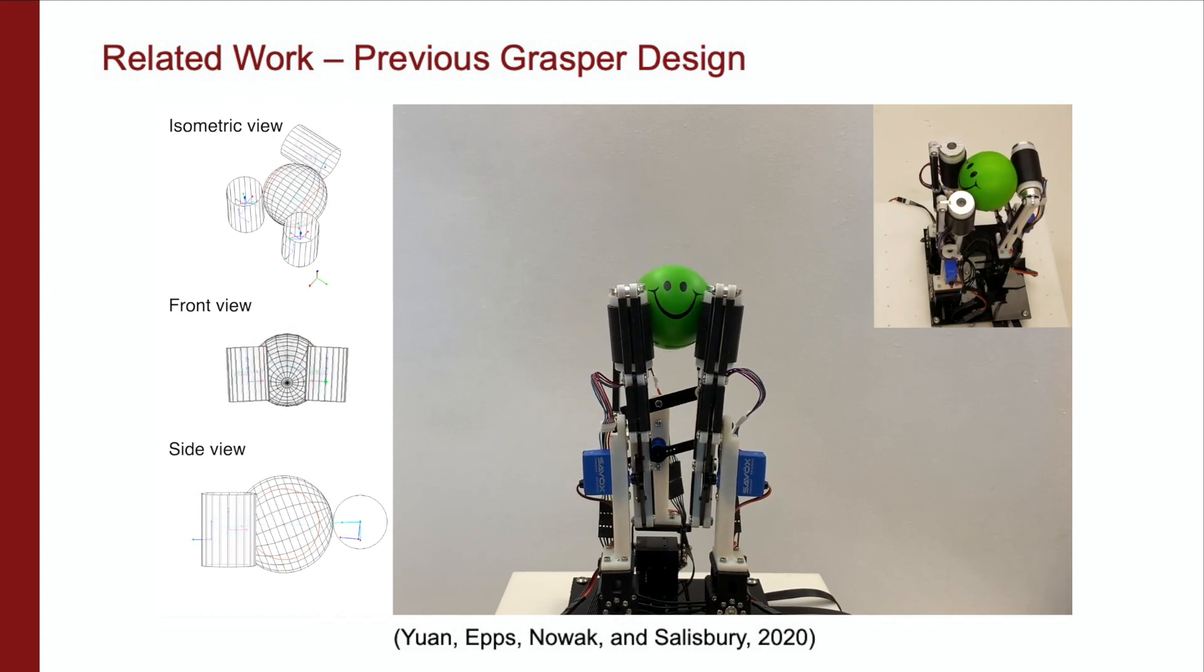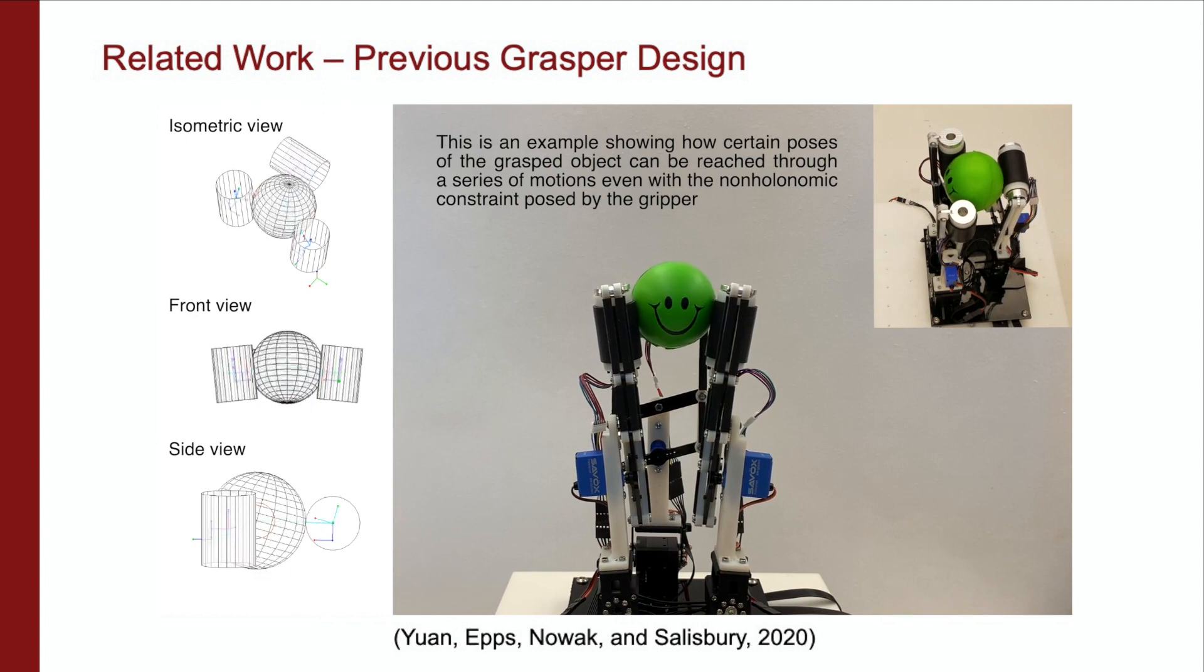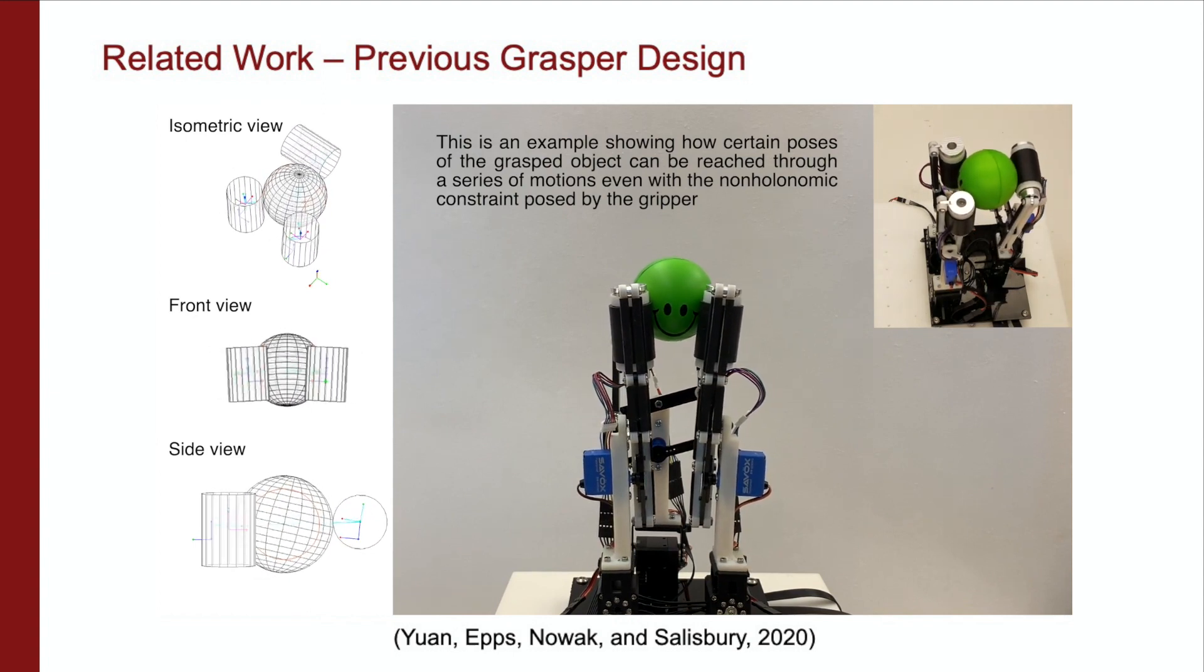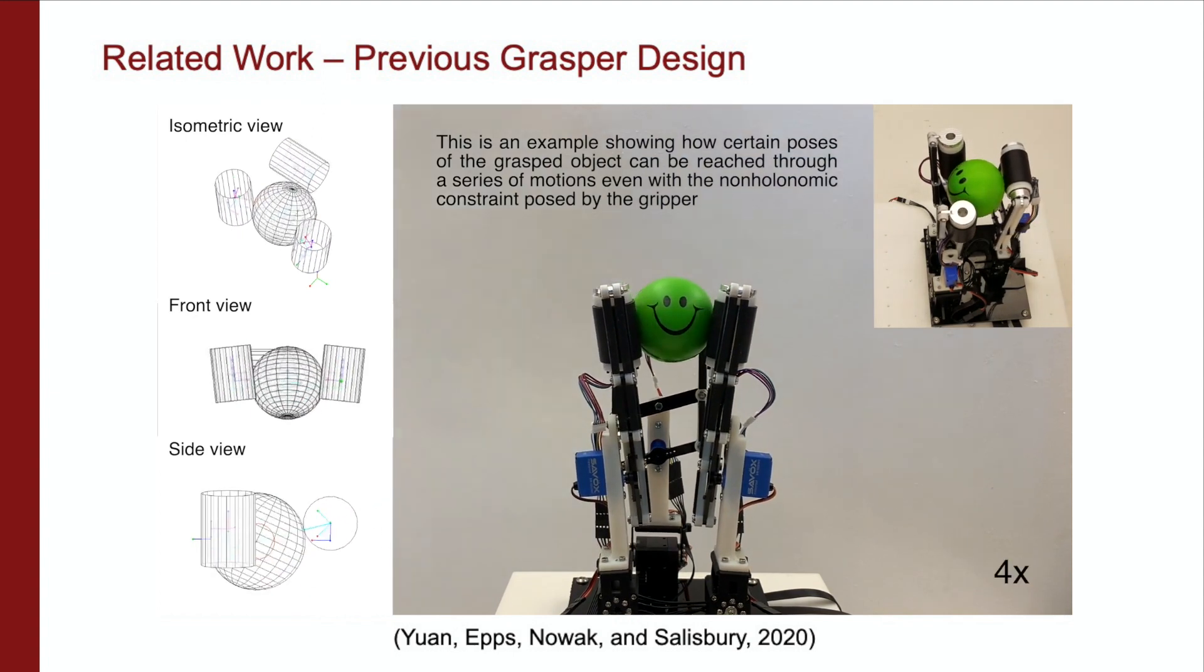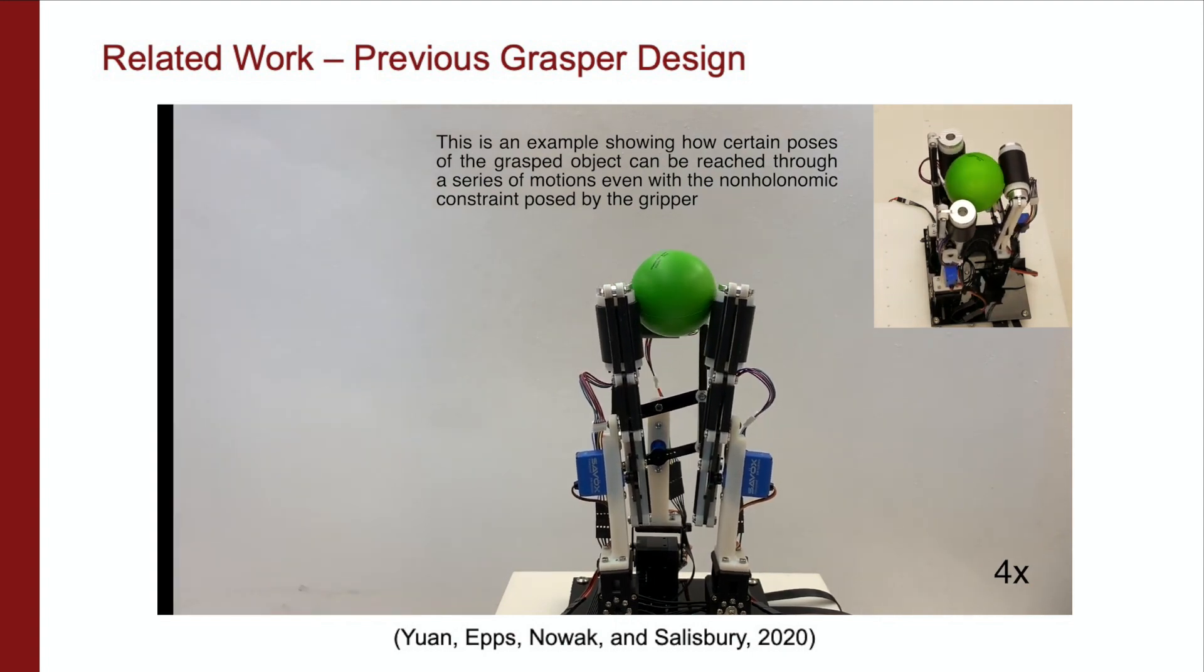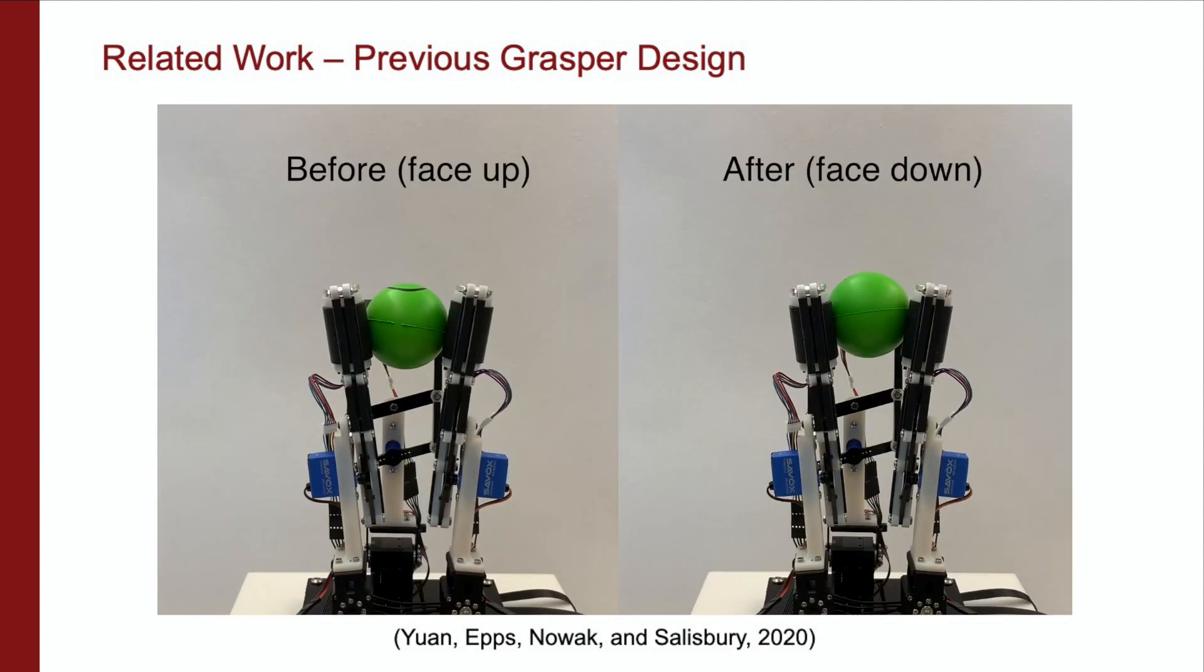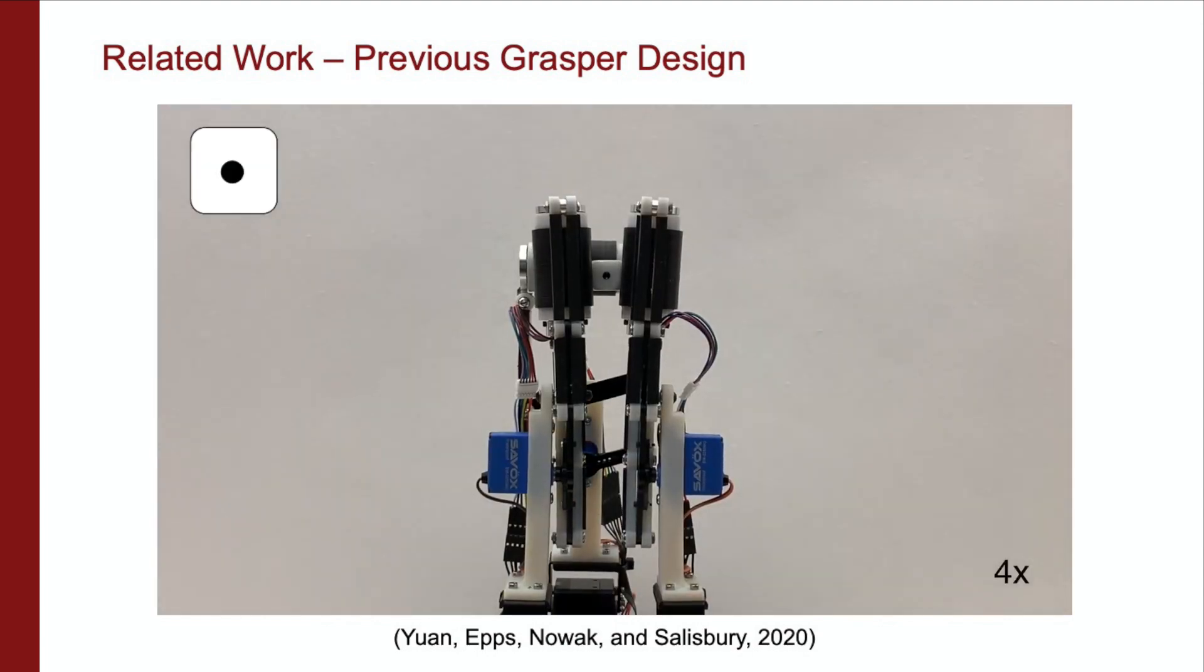Our previous work used articulated, actively driven cylindrical rollers at the fingertips of a grasper to explore imparting motions within a grasp using active surfaces. The grasper used three modular three-DOF fingers and demonstrated full six-DOF spatial manipulation of objects, including a sphere, cube, and cylinder, as well as various grasping modalities.